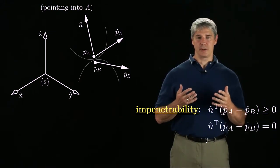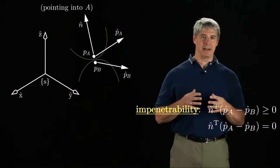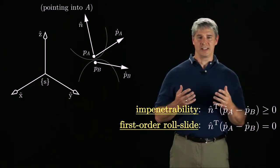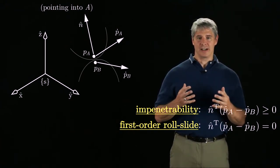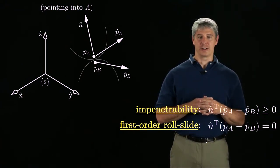If N transpose times P dot A minus P dot B is equal to zero, we call the contact a first-order roll-slide contact. This means that the contact is maintained by our first-order analysis.